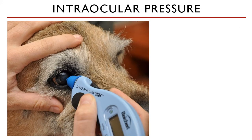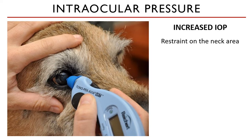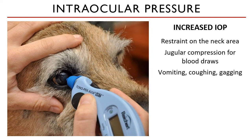If the tonometer shows you a high value for the IOP, it doesn't necessarily mean immediately that the eye has a condition localized in that eye. Since the IOP is a fluid pressure, its value can easily be increased by several things, such as restraints on the neck area — which could be from a leash or during restraint for physical examination — or jugular compression for blood drainage from the jugular veins, or in cases where a patient is currently or in their history was exhibiting vomiting, coughing, and gagging.